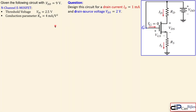Let's look at our circuit and design problem. We have an N-channel enhancement MOSFET with one DC source of nine volts. For this MOSFET, the threshold voltage is 2.5 volts and the conduction parameter kn is equal to four milliamps per square volt.